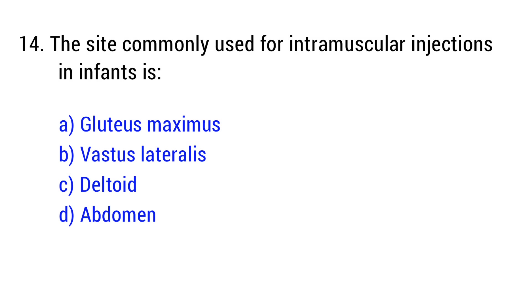Question number 14. The site commonly used for intramuscular injection in infants is? The right answer is option B: vastus lateralis.